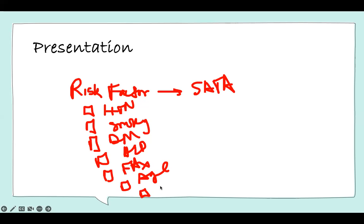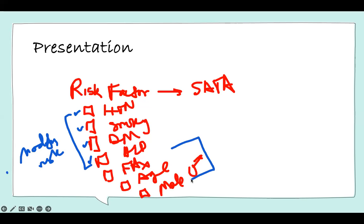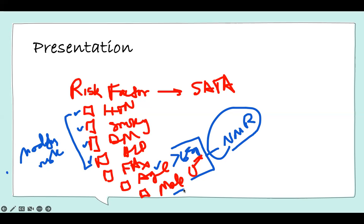Male sex is a major risk factor — men have a high risk. Hypertension, smoking, diabetes, and hyperlipidemia are modifying risk factors — you can modify them. You can stop smoking to prevent it. But family history, age, and male sex are non-modifying risk factors. You have no choice. Age threshold is 65 years old — if you're more than 65 and male, you are at risk.